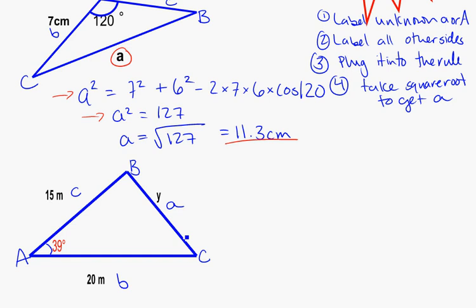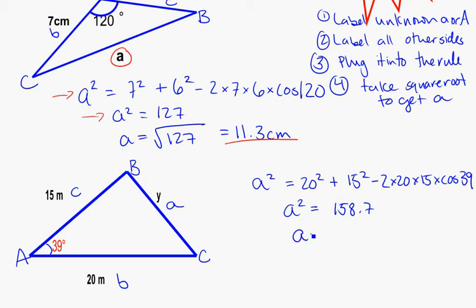So the next step will be to plug into the formula. So again, it's a squared is equal to b, which is 20 squared, plus c squared, which is 15 squared, minus 2 times 20 times 15 times cosine of the angle 39. Plugging that all carefully into the calculator, you'll get a squared is equal to 158.7. And as our last step, don't forget it, we need to find out what a is, which is actually taking the square root of 158.7, is going to equal 12.6 meters. So a, the length of side a, is equal to 12.6 meters.